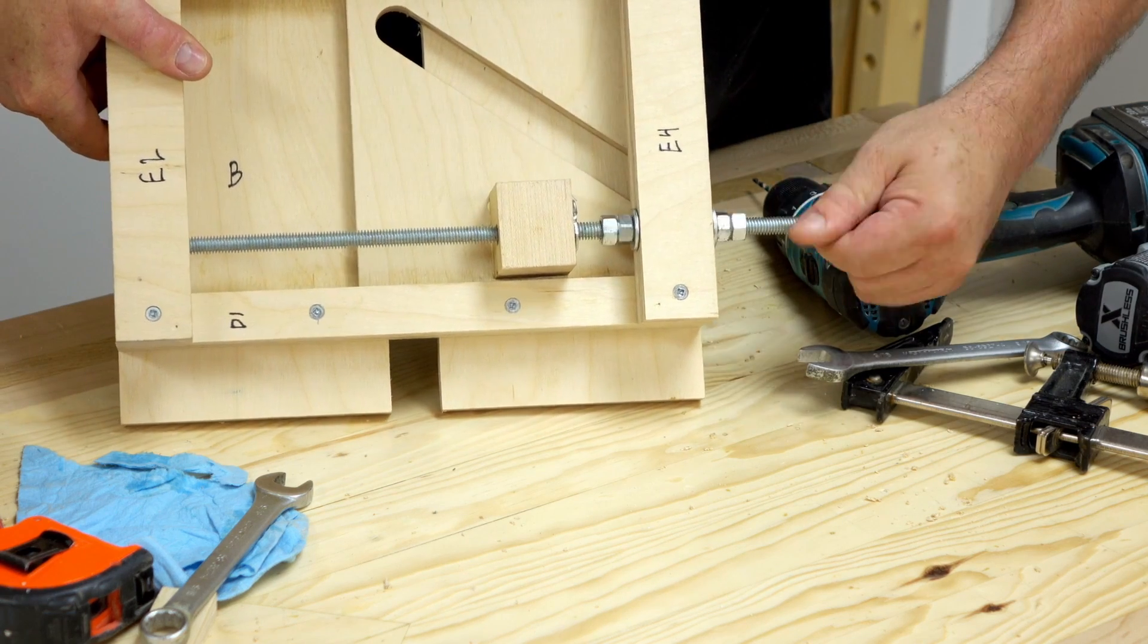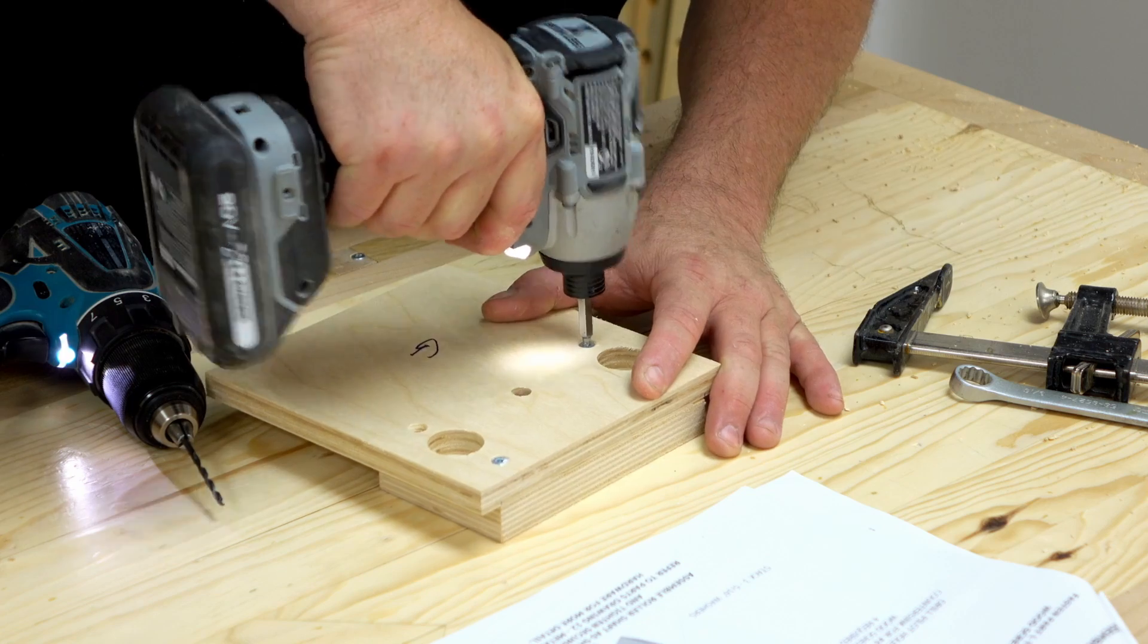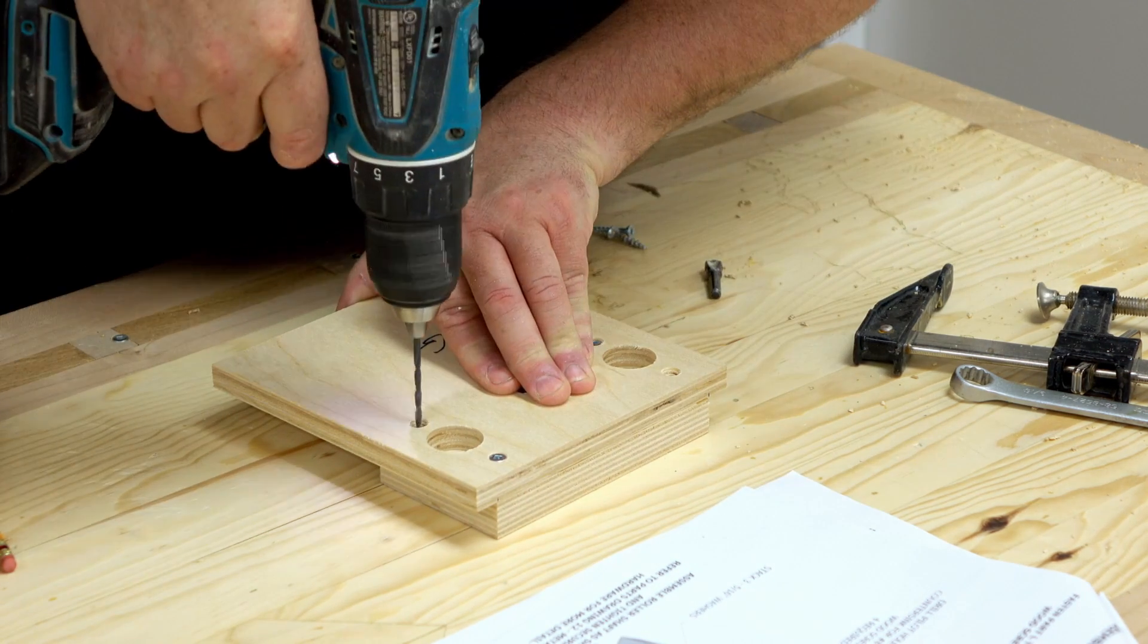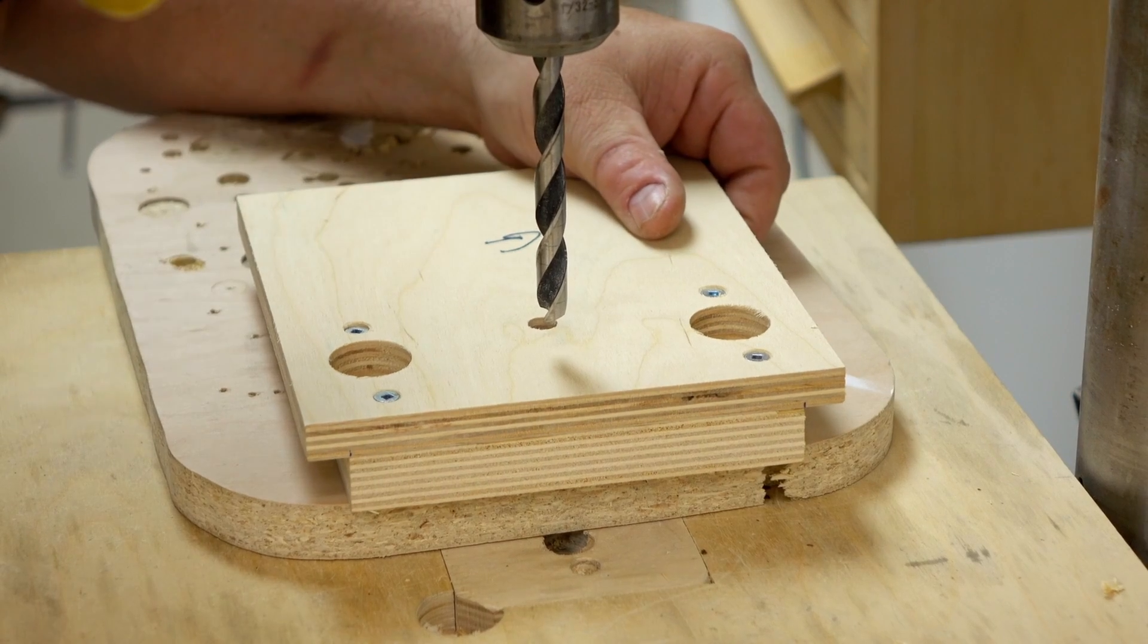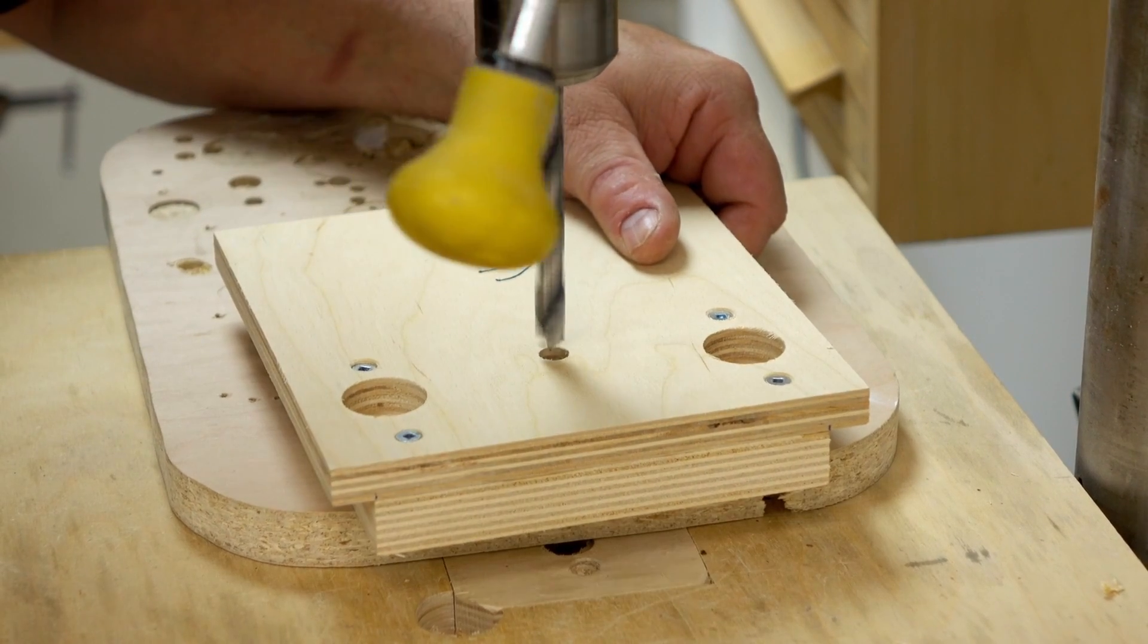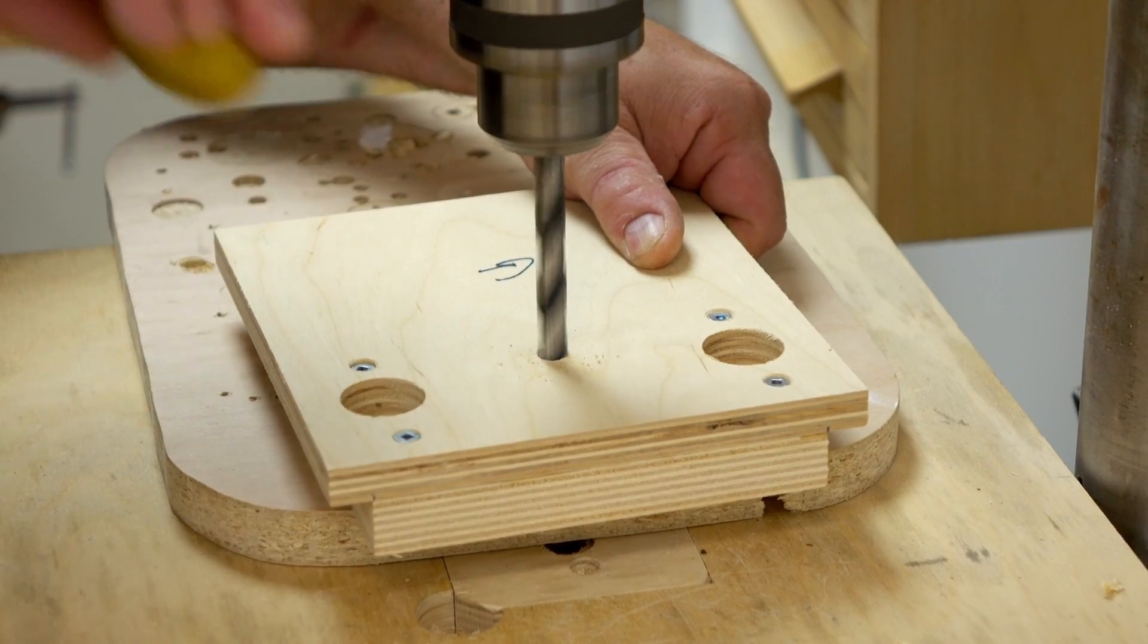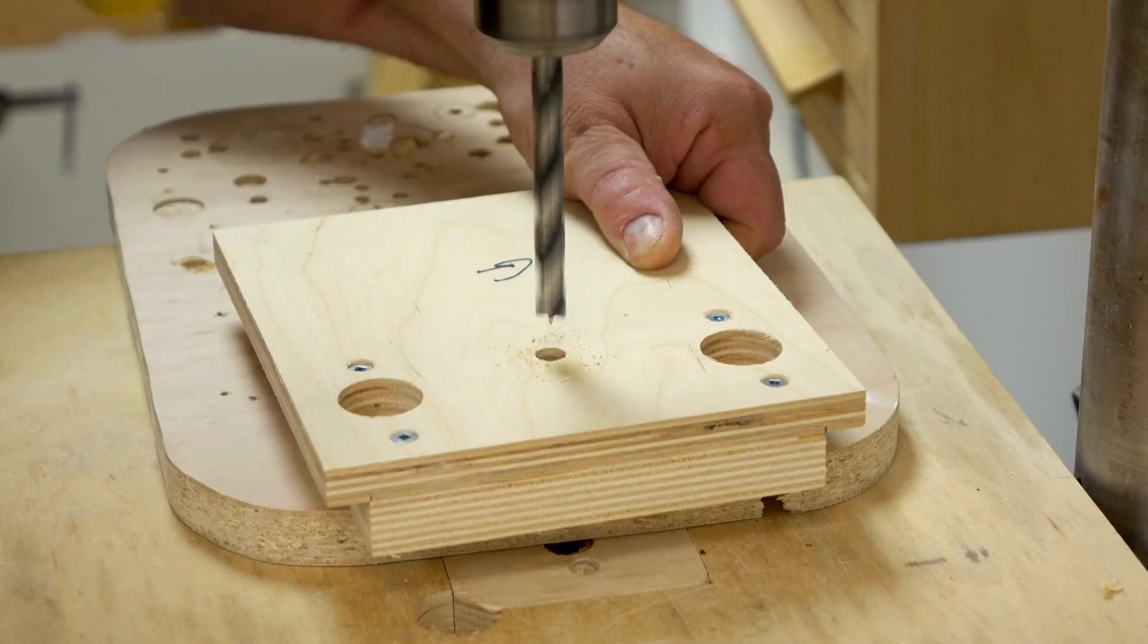In assembly step four, I'm going to fasten part G to part L using just one inch wood screws and no glue. After these two parts are assembled, that center hole should line up. If you have to, run the three-eighths inch drill bit down through that hole again to make sure that they do.